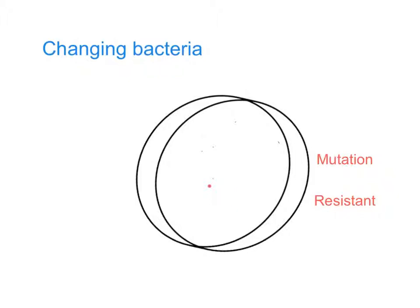But if it isn't, we've got a bit of a problem. Because what now starts to happen is that bacterium will start to reproduce. Our original antibiotic will now be no use against this disease, against this pathogen — it'll be no use at all. We know that it doesn't kill it, because we've already tried it once.